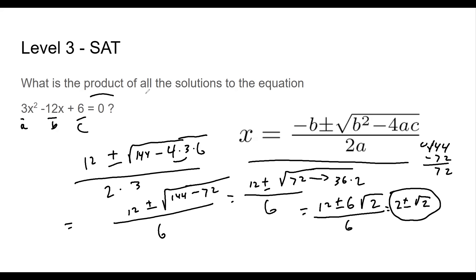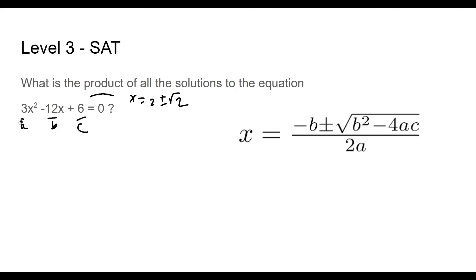All right, I'm going to erase all of this. I'm going to write down x is equal to 2 plus or minus the square root of 2. So I don't forget that. All right, and I'm going to erase this just to create some room here. All right, now I've got to do 2 plus the square root of 2 times 2 minus the square root of 2. Because product is times.